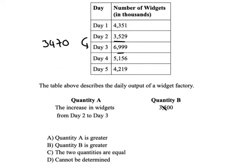And we're comparing quantity A to quantity B, and we say, great, well, quantity B is greater. 3,500 is greater than 3,470, so the answer must be B.